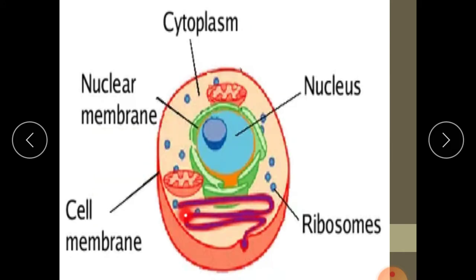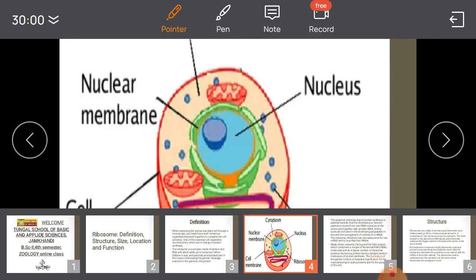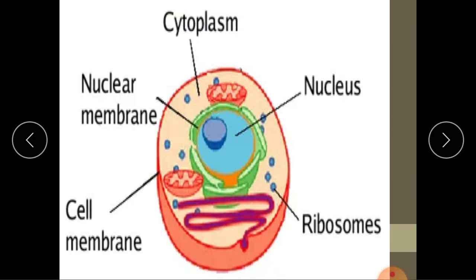So this is the cell — the animal cell. This is the nucleus, the nuclear envelope, and these particle-like structures are ribosomes.